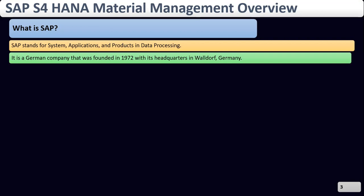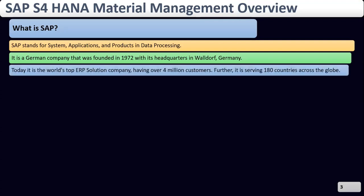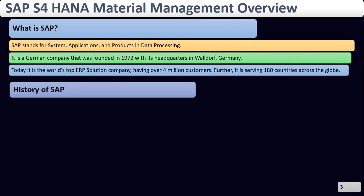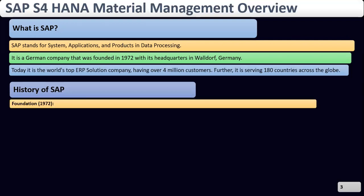SAP is a German company founded in 1972 with headquarters in Walldorf, Germany. It is the fourth largest software company in the world, the largest top ERP solution company, and has four million customers using SAP, covering 180 countries across the globe.